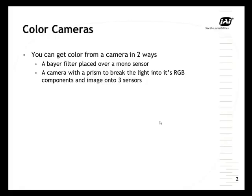You can get color from a camera in two ways. The first involves breaking up light into its component colors via a prism. In most cases, we can separate RGB and project the colors from the image onto three separate sensors. RGB video then comes out of the camera simultaneously.